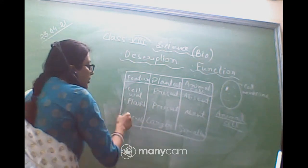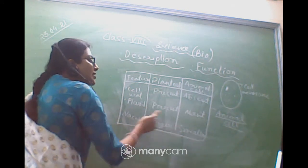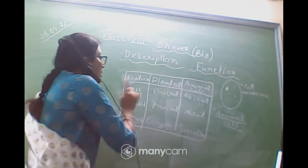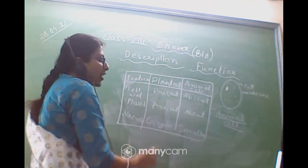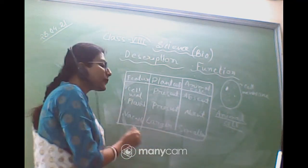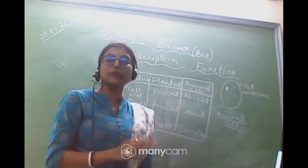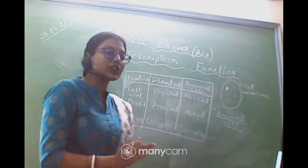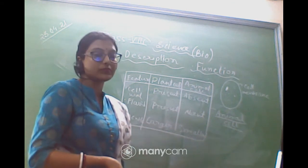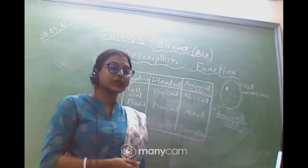Please write differentiating questions in this tabular manner — it will save your time in examinations. Is this clear to you? Vacuole is bigger in size, cell wall is present in plant cell; in animal cell, vacuole is smaller in size, cell wall is absent. Very good, you all are absolutely right.